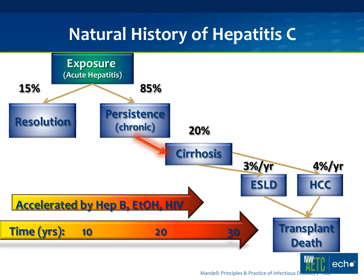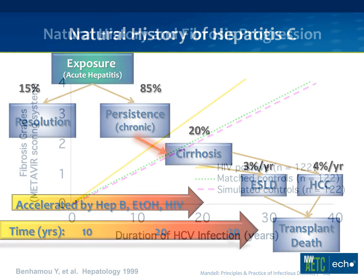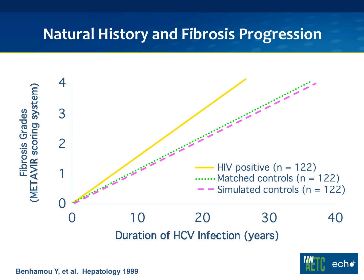What we're trying to do with treatment is really to head off cirrhosis — that's why it's highlighted with the red arrow. Because once you develop cirrhosis, that's when bad things happen. A cirrhotic has an annual risk of 3% per year of getting end-stage liver disease and an annual risk of 4% per year for liver cancer — an incredibly aggressive cancer with very poor prognosis.